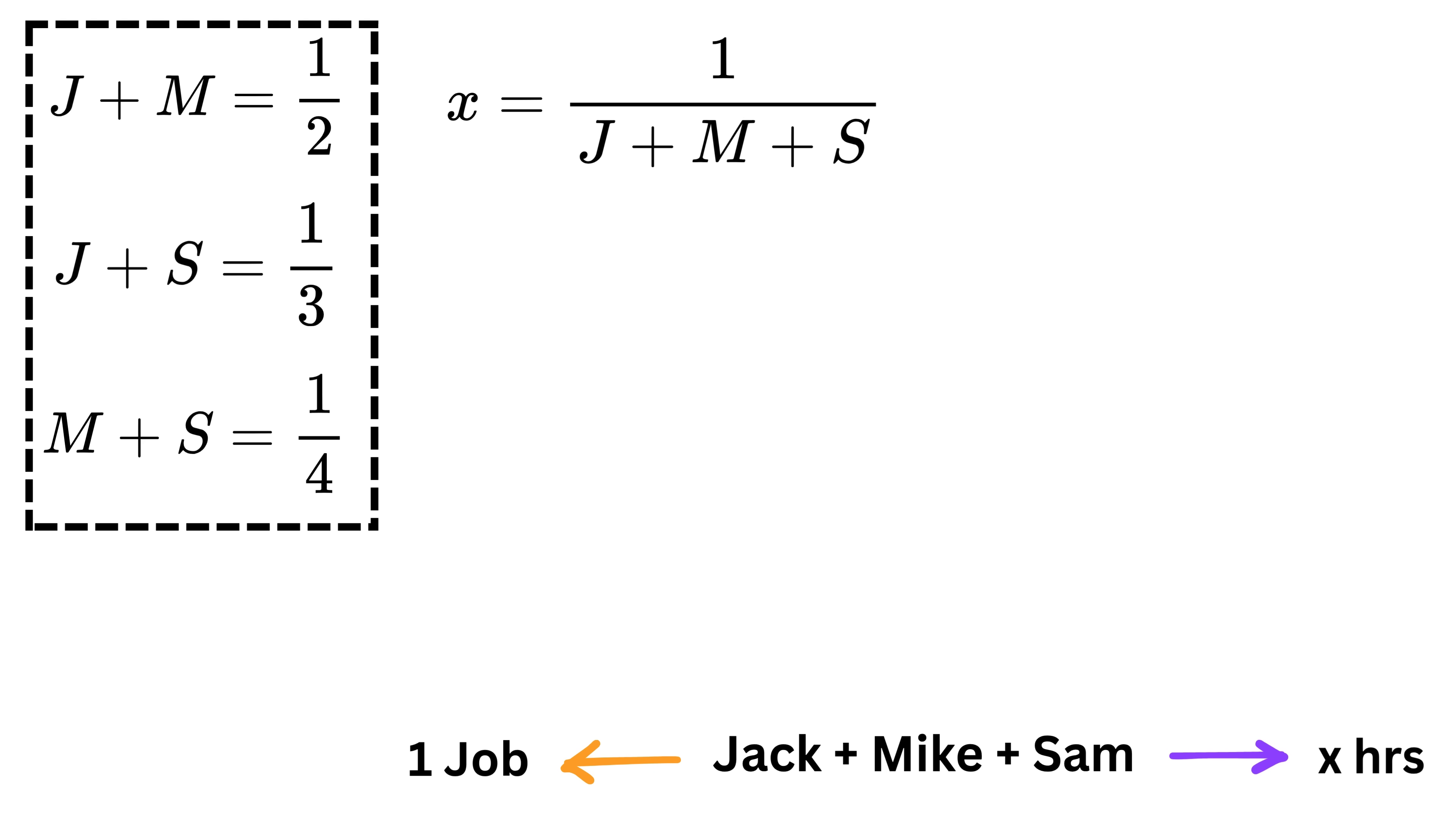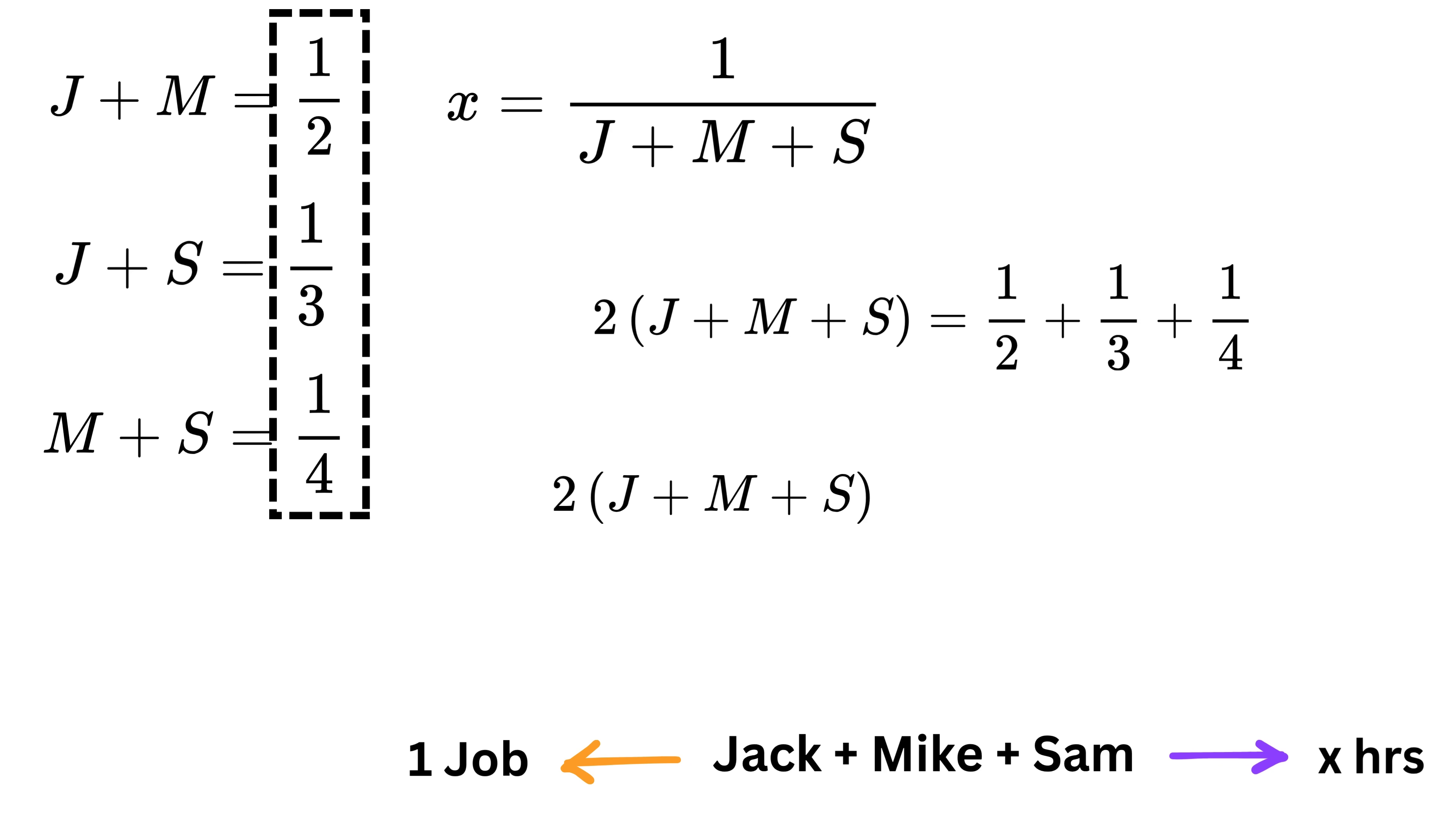To do that, it's simple. We can just add all three equations together. On the left side, we will get two J's, two M's, and two S's, because each name appears twice. So that becomes two times the sum of J plus M plus S. On the right side, we add the three fractions, one divided by two plus one divided by three plus one divided by four. To add those fractions, let us find a common denominator. The smallest number that all two, three, and four divide into evenly is twelve. So we will convert each fraction to have twelve as the denominator. One divided by two becomes six divided by twelve. One divided by three becomes four divided by twelve. One divided by four becomes three divided by twelve. When we add them, we get six plus four plus three, or thirteen. So the total is thirteen divided by twelve. And after dividing both sides by two, J plus M plus S equals thirteen divided by twenty-four.